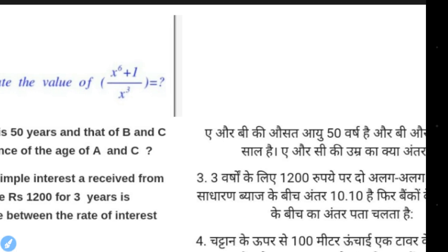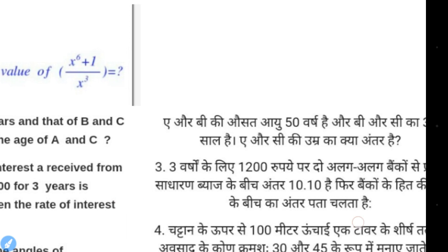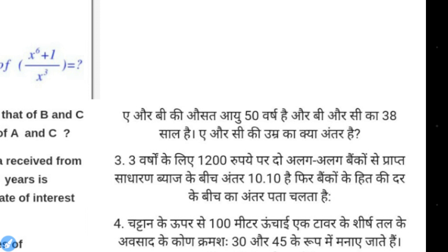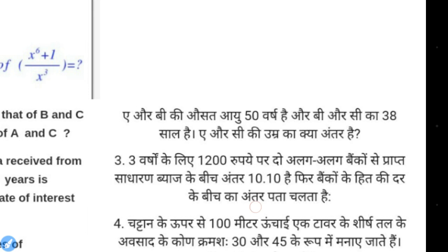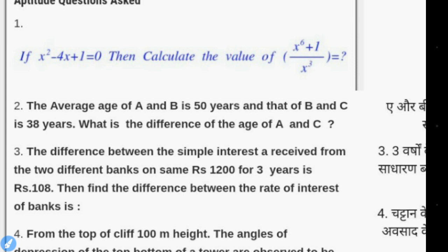The average age of A and B is 50 years, and that of B and C is 38 years. What is the difference between the ages of A and C? You will have two equations: A plus B divided by 2 equals 50, and B plus C divided by 2 equals 38. After that, you have to find A minus C. You eliminate B's values from both equations to find the answer.